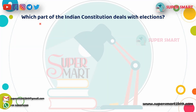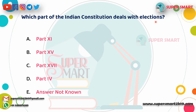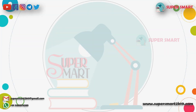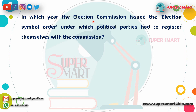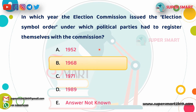Which part of the Indian Constitution deals with elections? This is Part 15. In which year did the election commission issue the election symbol order, under which political parties are required to register themselves with the commission? The election symbol order was issued in 1968.